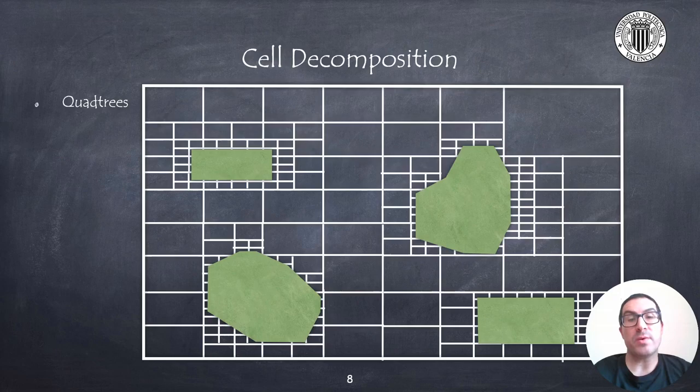In this sense, quadtree is a representation frequently used when performing cell decompositions in 2D spaces, which consists of dividing a cell into four smaller and equally sized cells. Subdivided cells will only be subdivided again if they are partially occupied, up to a maximum resolution or subdivision level.